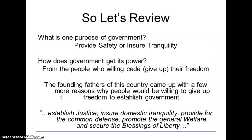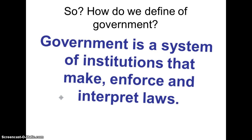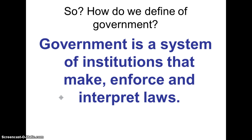So, how do we define government? Government is a system of institutions that make, enforce, and interpret laws. Moving forward, we will look in particular at those different institutions and how they actually apply these particular powers.